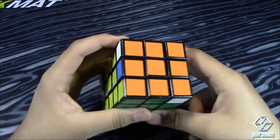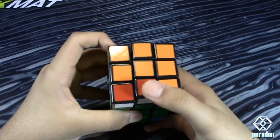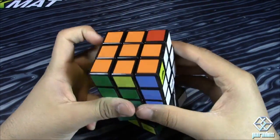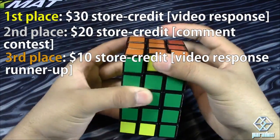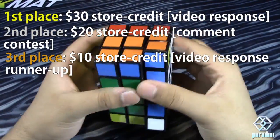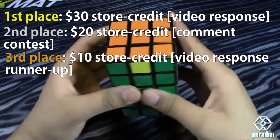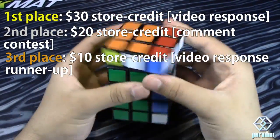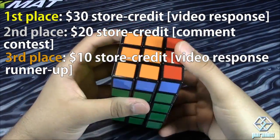So this contest is sponsored by TheCubicle.us, so thanks to Phil for sponsoring it. And the prize for the best video response will be $30 store credit for TheCubicle.us. And the last time I only had two prizes, and there were a lot of good video responses. So this time there are three prizes, and the runner up for the video contest will get $10 in TheCubicle store credit.